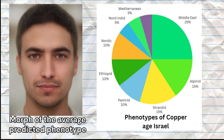The most common phenotype among the 20 samples were Middle Eastern phenotypes, although other phenotypes were also present, such as Strandid, Mediterranean, Pamirid, Alpinid, Ethiopid, and two samples were also predicted to exhibit a Nordic-like phenotype, one of those being low quality. Here is an average morph of the phenotypes predicted.